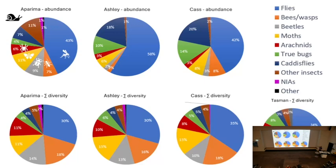Data from the Tasman original pilot study shows almost the same graph again — stacks of flies, quite a few bees and wasps (mostly tiny parasitoid wasps), then lepidoptera (moths), beetles, and spiders also coming in at reasonable numbers of species.